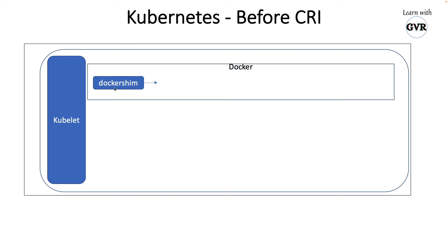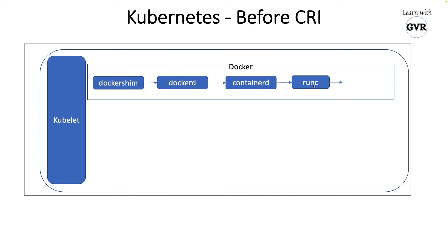The docker shim API handled all of that. If you install Docker, it has a Docker daemon, and the shim talks to the Docker daemon. Docker daemon talks to containerd, which is also by Docker — containerd takes care of second-level processing. Containerd talks to runc, a low-level container runtime developed in C, which actually creates the container. So the chain was: kubelet → shim API → Docker daemon → containerd → runc → container created.